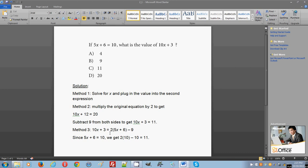The second method: if you multiply the original equation by 2, you're going to distribute 2 to all three terms on the left side and the right side. So you're going to get 10x plus 12 equals 20.